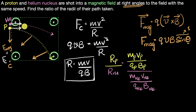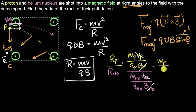A few things are common: they're thrown with the same speed, so speed cancels out. They're thrown in the same magnetic field, so the magnetic fields cancel out. Their masses are different and their charges are different, so simplifying I get: mp over qp times qHe divided by mHe.